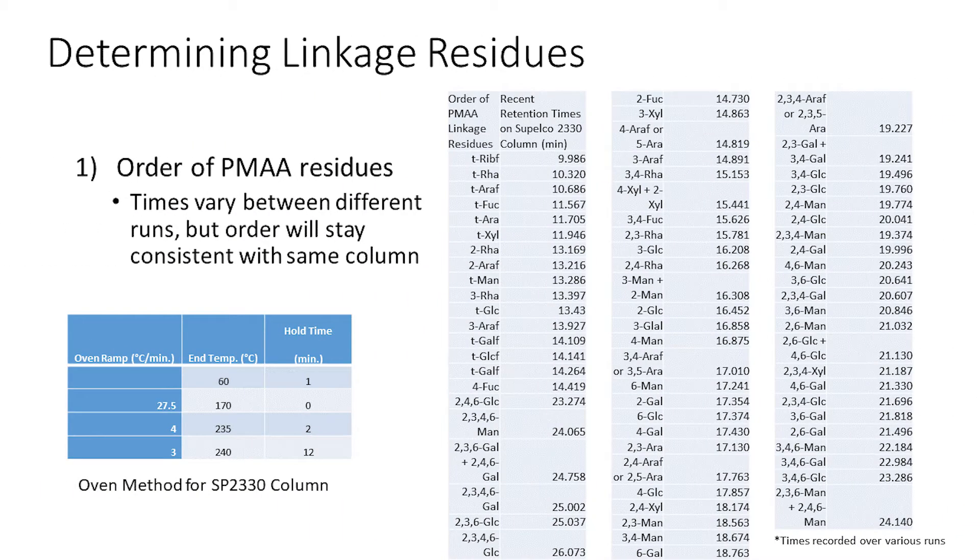The first step towards identifying peaks in a linkage GC chromatogram is to know the order at which PMAA residues elute. Here, we have an example of a sort of database we've collected of retention times for linkage residues we've observed over time using the conditions you see in the table. Using the SP2330 column, the order which these linkage residues elute are fixed, though their retention times may change between runs. You may see a residue which has an earlier retention time listed after a later eluting residue in the table. This is due to not updating that retention time because that residue is uncommon.